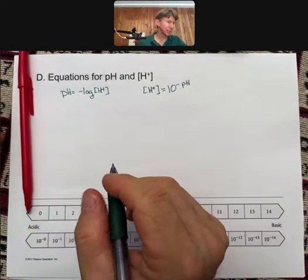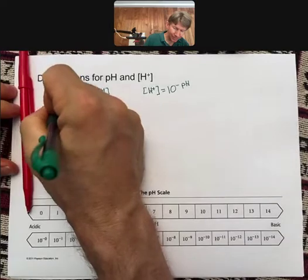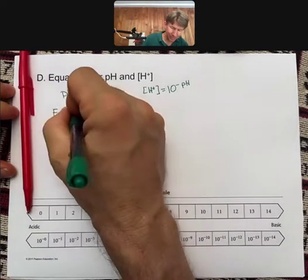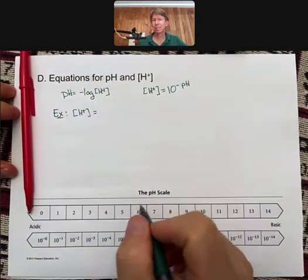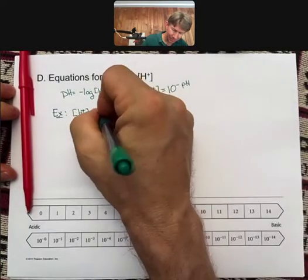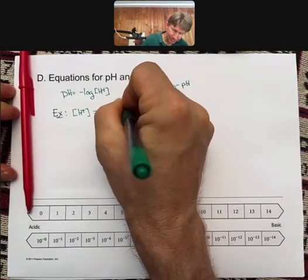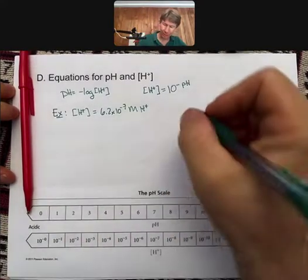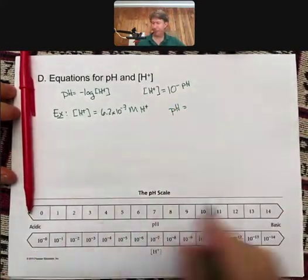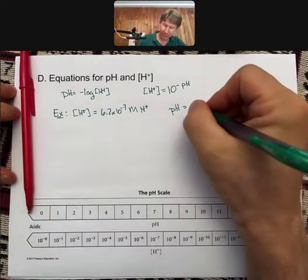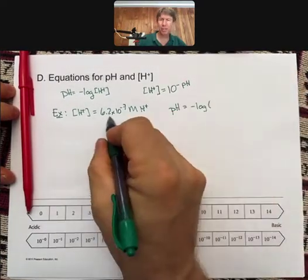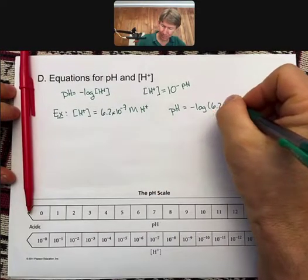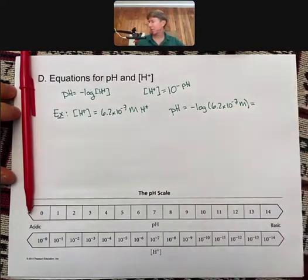Now we're going to do an example. Let's suppose that the concentration of H+ is 6.2 times 10 to the minus 7 molarity. First question: what is the pH? The pH is going to equal the negative log of this number, 6.2 times 10 to the minus 7, just like we did before.